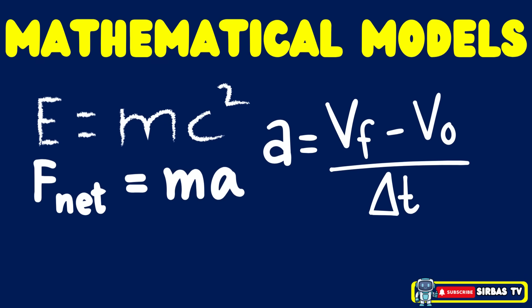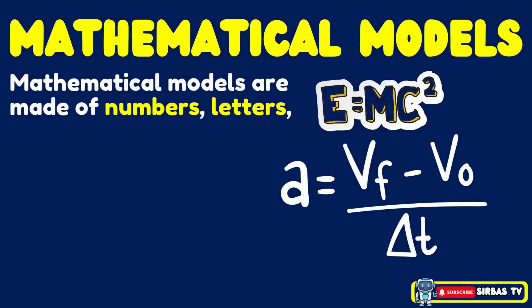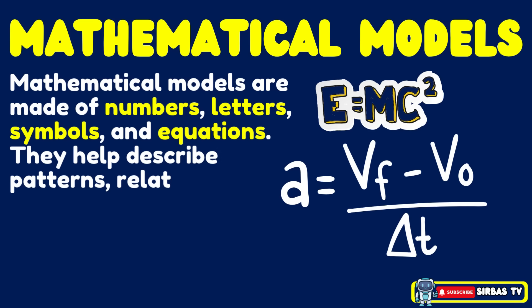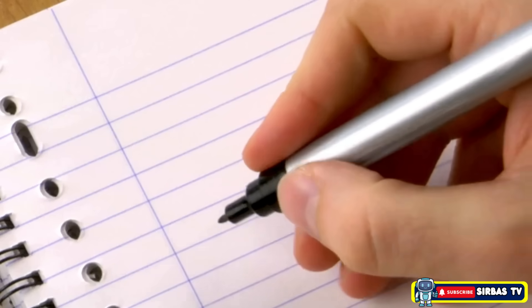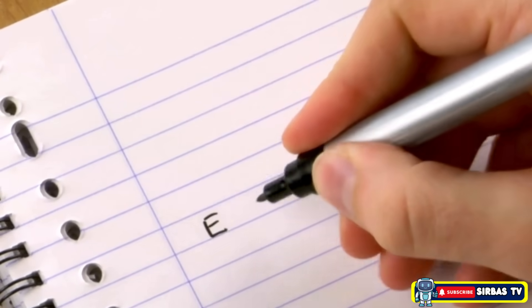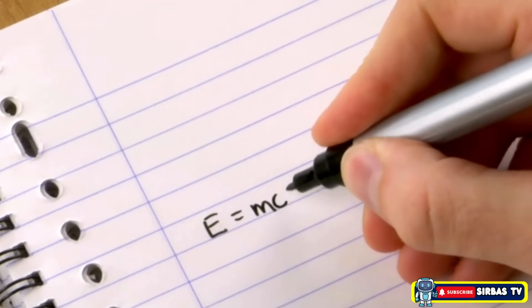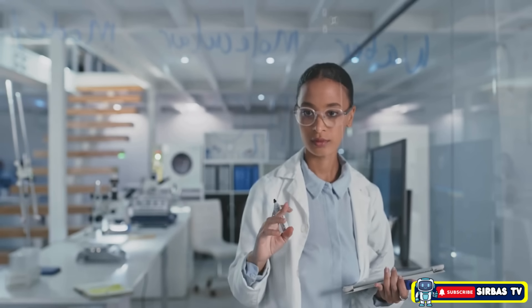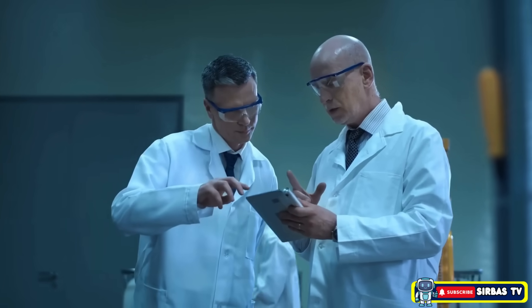Next up, we have mathematical models. These are models made of numbers, letters, symbols, and equations. They help describe patterns, relationships, and even predict what might happen next. Mathematical models use numbers and equations to show patterns, relationships, or how things behave. These models are made from what scientists observe, measure, and understand through theories.